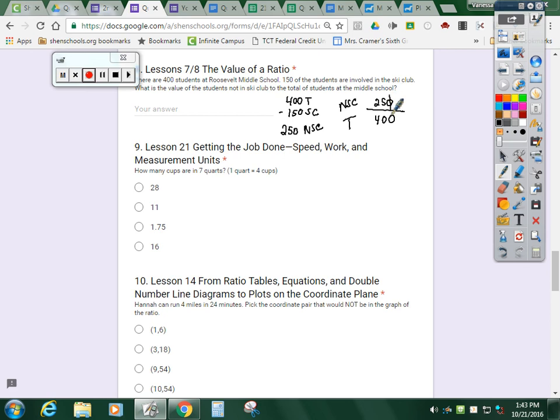If the zeros line up, you can cross them out. And then you can simplify this by dividing by five, dividing by five. The answer should be 5 eighths.